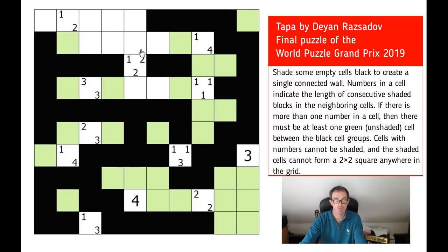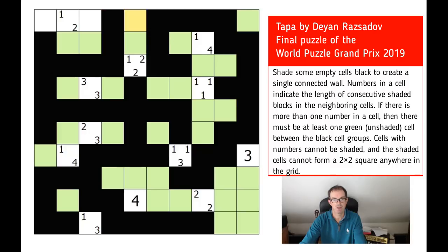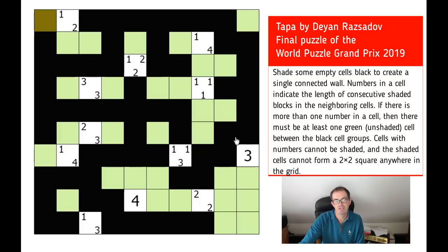The moment that's black, we've got to avoid a 2 by 2. This square must be black. This square must be green. This square must be black. Avoid the 2 by 2 problem. Therefore, this square is black. We're able now to make the connection. And we're just left with finishing off this 1 and the 2 here. And the way that's going to have to work is like that.